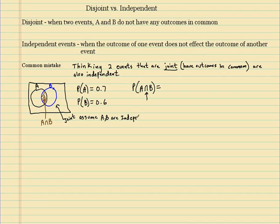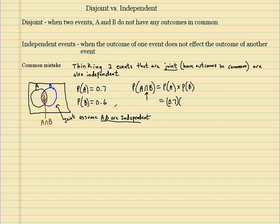Then they go right to rule 5, which says if two events are independent, then I'm allowed to multiply their probabilities. They take the probability of A, which is 0.7, and the probability of B, which is 0.6, multiply them together, and get 0.42, and say that's the answer.